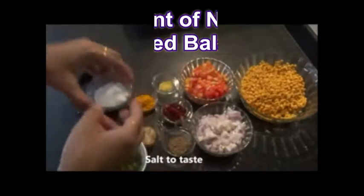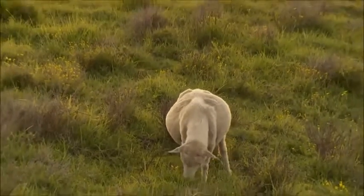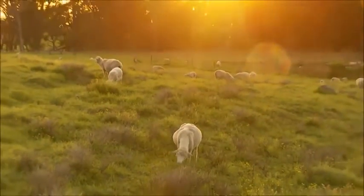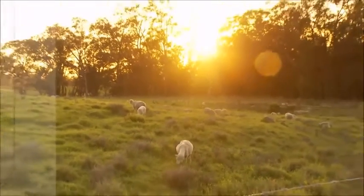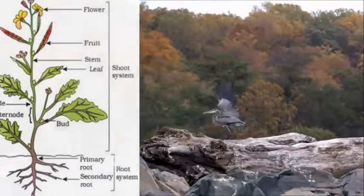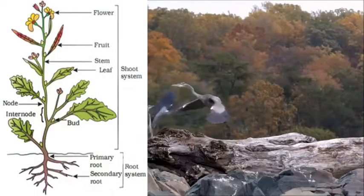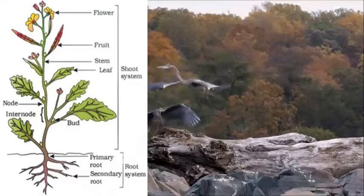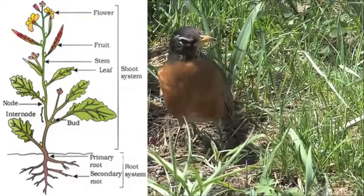Now let's come to the food source. We get food from plants and animals. Plants hold themselves by their roots in soil. The part inside soil is called the root part and the part outside the soil is called the shoot part.